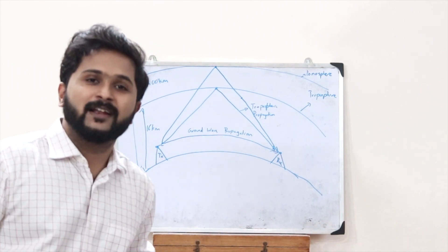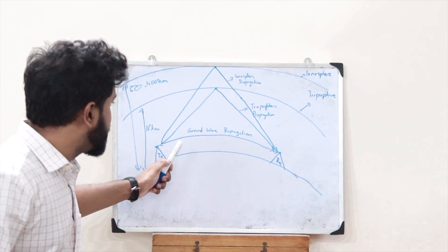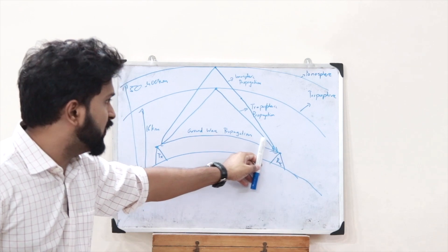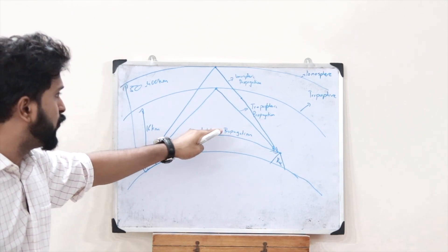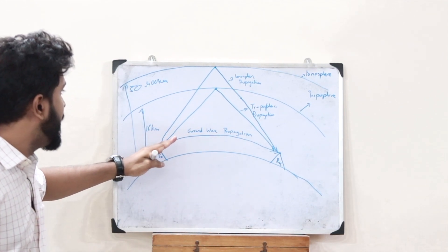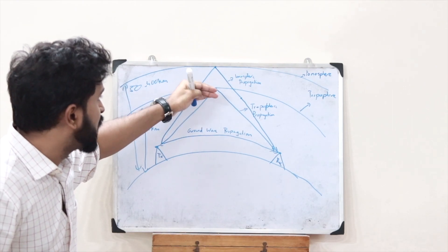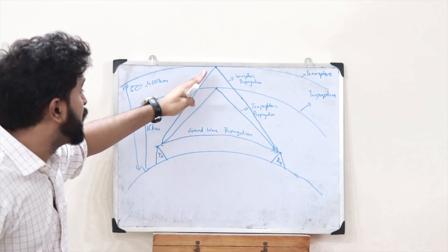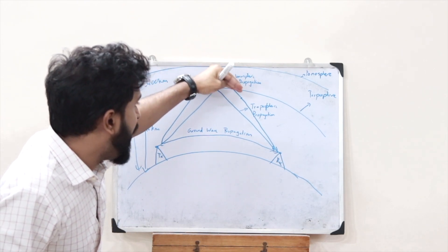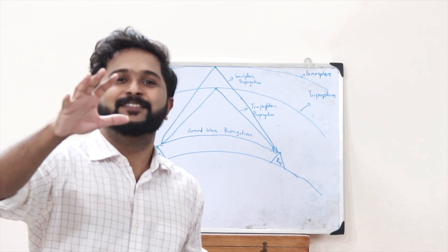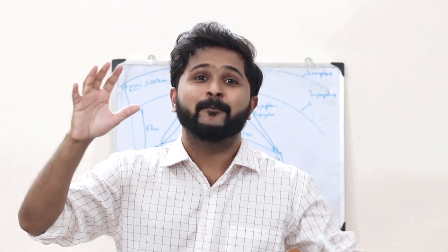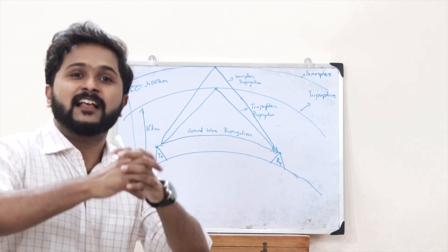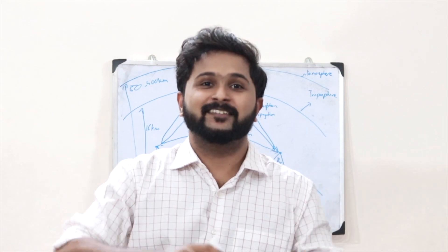So these are the three modes of propagation. Ground wave propagation: the electromagnetic radio wave propagates along the curvature of the earth. Tropospheric propagation: the radio waves strike the troposphere and get reflected back onto the receiver. Ionospheric propagation: the transmitter sends the electromagnetic radio waves onto the ionosphere and they get reflected back to the receiver. The combination of tropospheric and ionospheric propagation together is what you call sky wave propagation.